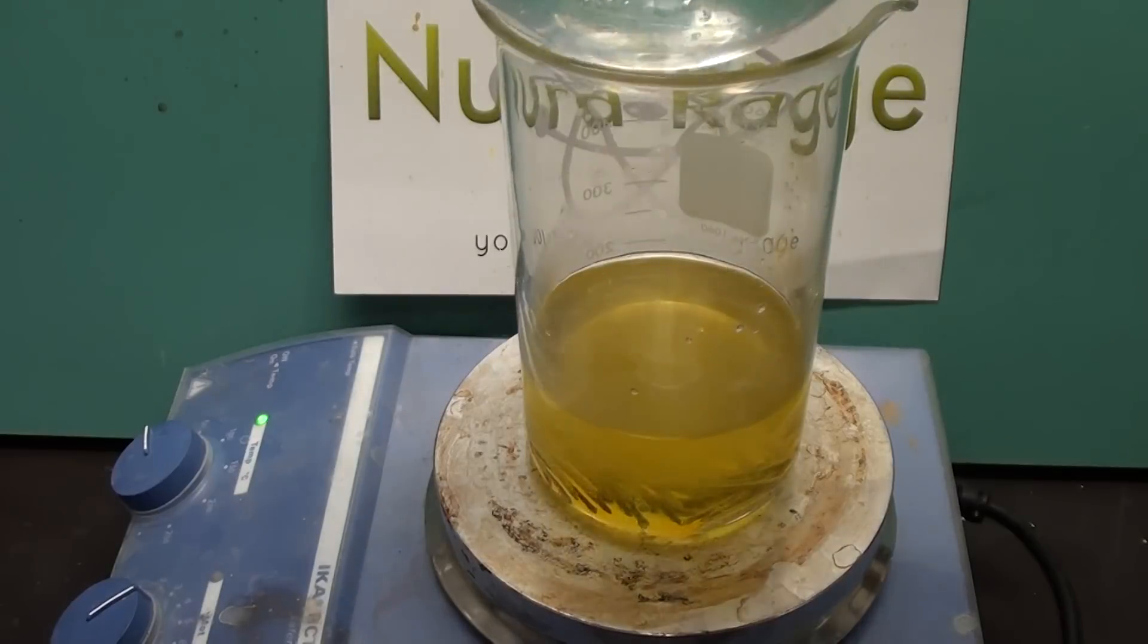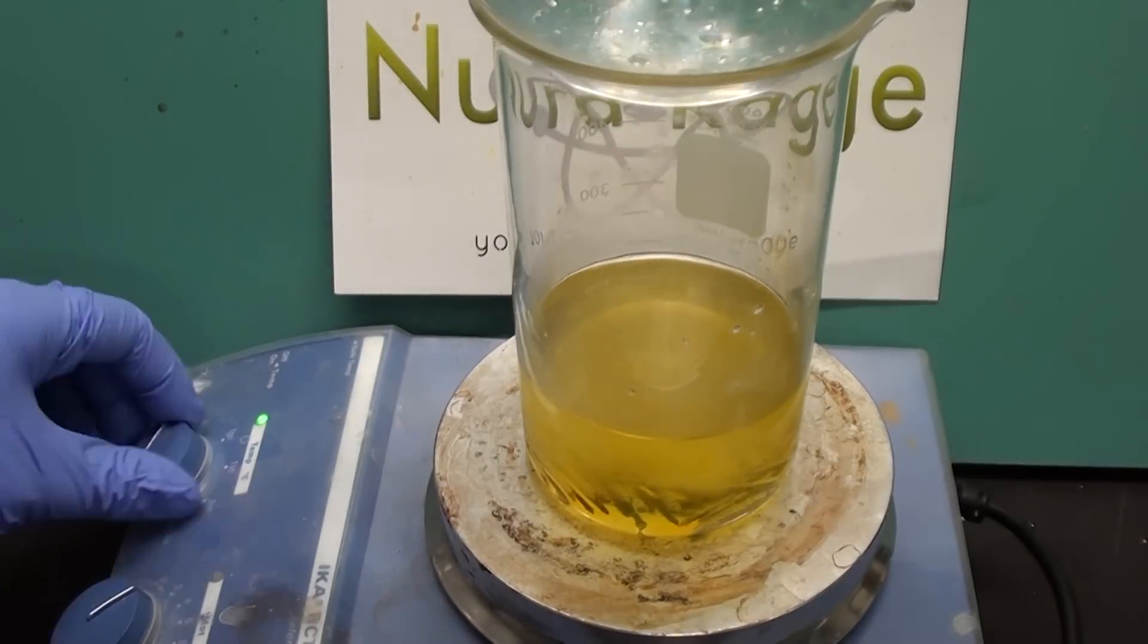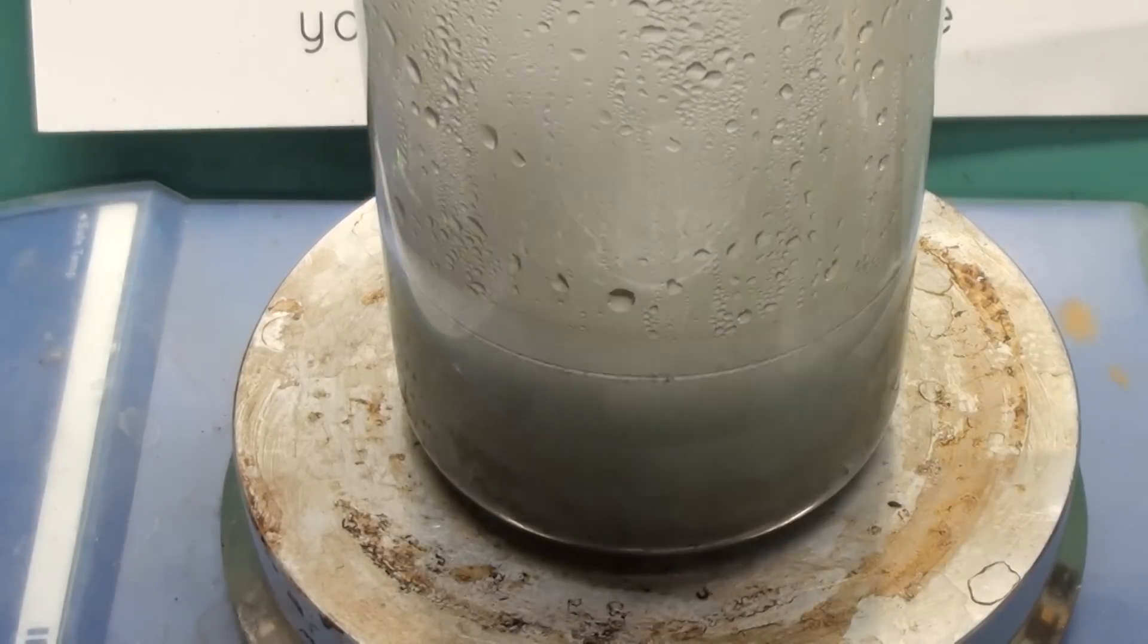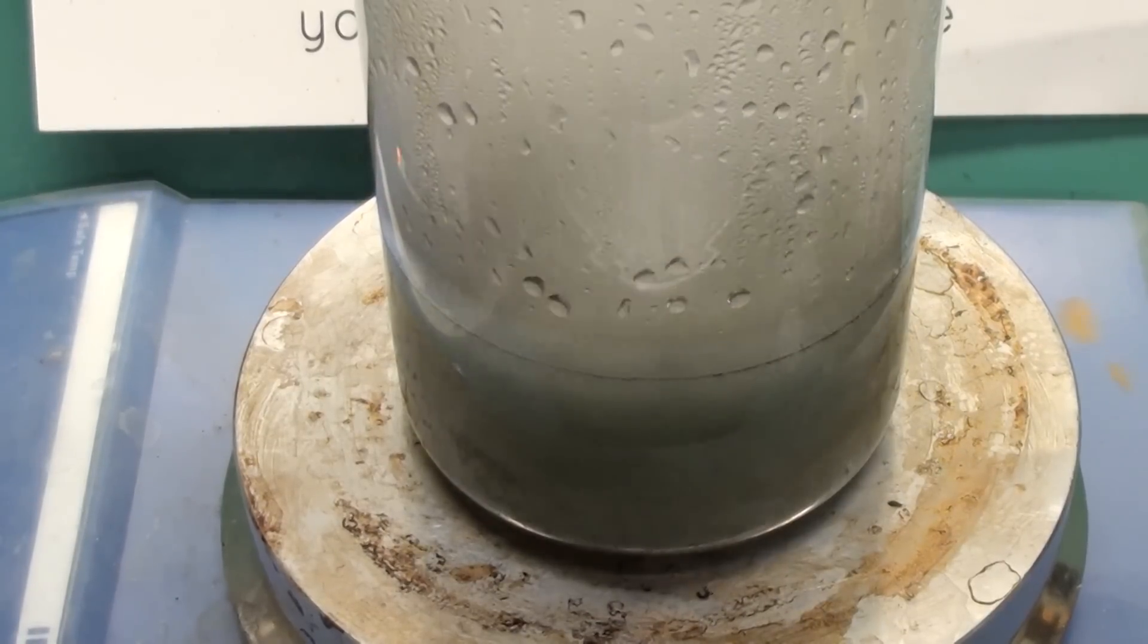I'm going to put this round bottom flask of cold water on top to recondense any vapors. And there it goes. Obviously if you're going to boil acid, do this outside or in a fume hood.